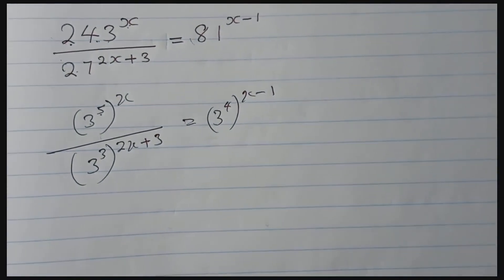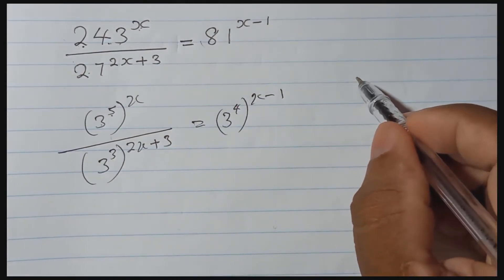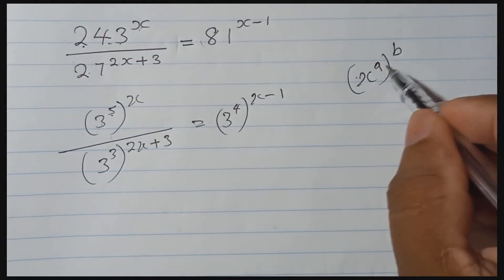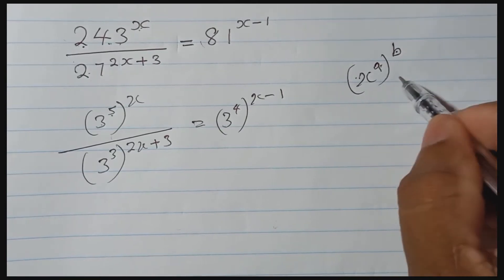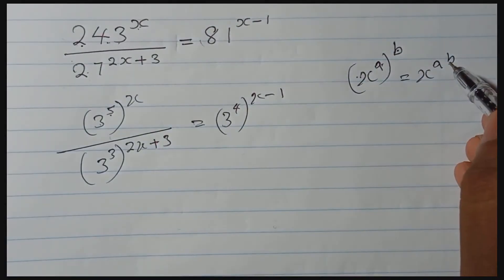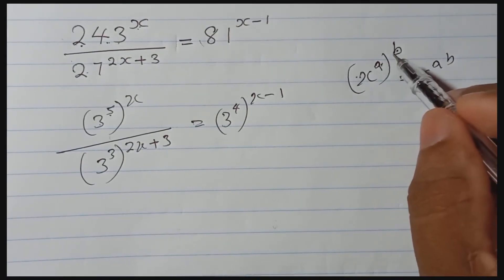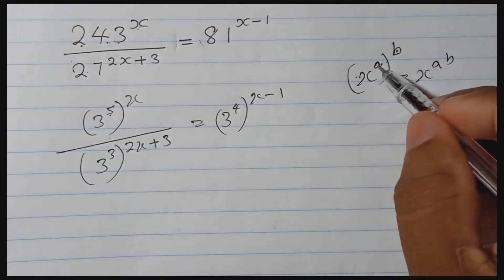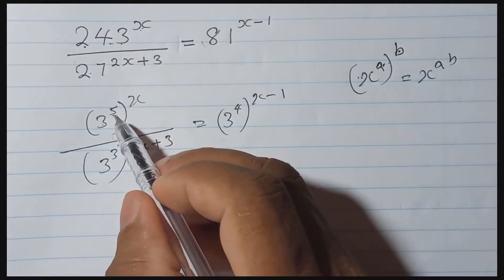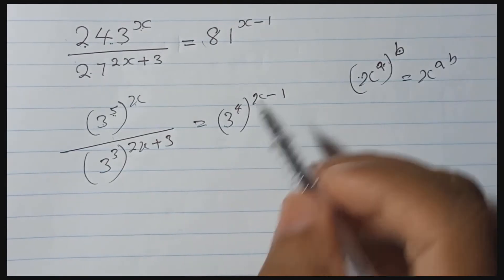Now what do I need to do? This rule I explained earlier: if you have x to the power a, and again an index b, we can multiply these two indices. That equals x to the power a·b. So when you have a power of a power like this, you can multiply the two indices. Apply the same rule here: multiply 5 by x, multiply 3 by 2x, multiply 4 by the index.